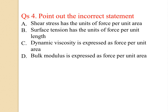Point out the incorrect statement: (a) Shear stress has the units of force per unit area — yes, correct, Newton per meter square. (b) Surface tension has the units of force per unit length — yes, correct. (c) Dynamic viscosity is expressed as force per unit area — no, incorrect; its unit is Pascal·second, or Newton per meter square·second, or poise. (d) Bulk modulus is expressed as force per unit area — correct. C is incorrect.